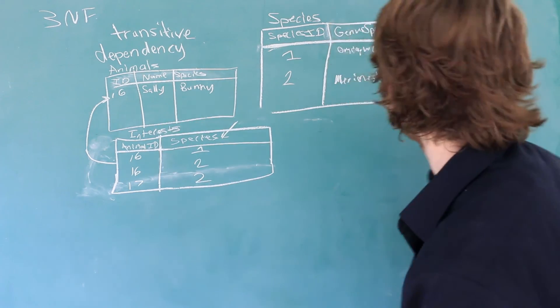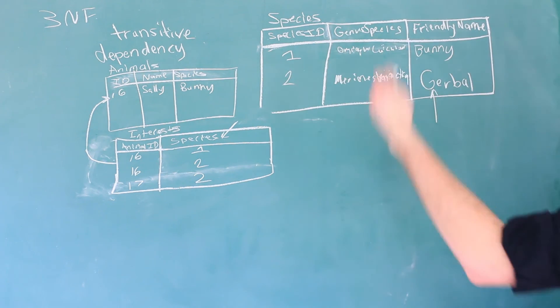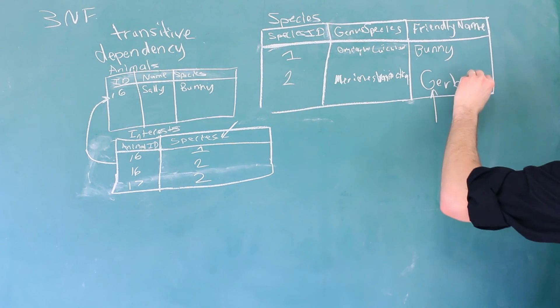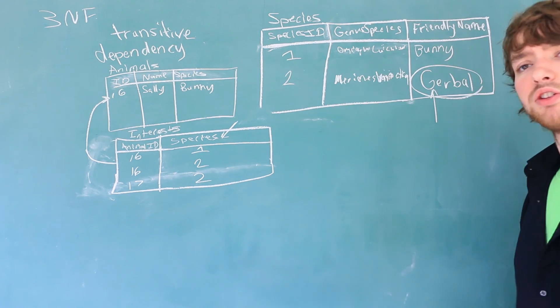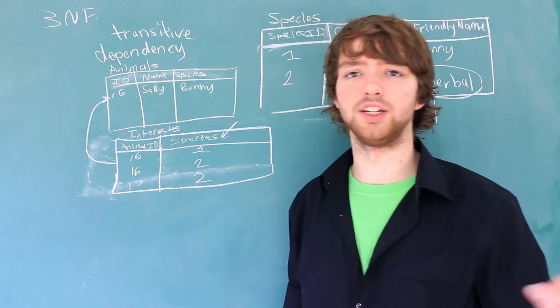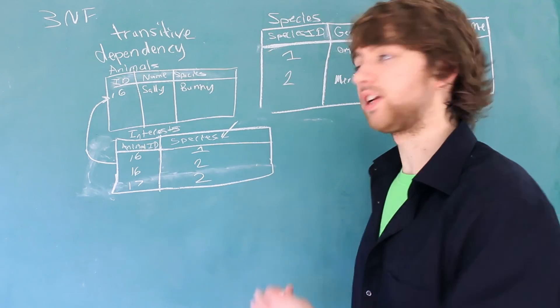You can see that this fixed our transitive dependency because we're not having any data about the species in this interest table. And you can see up here, this might be an issue. That's because if you have like quadrillion species in here, this might be very redundant because it's a very vague name. So you may want to break that off into like a friendly name table or something along the lines of that.